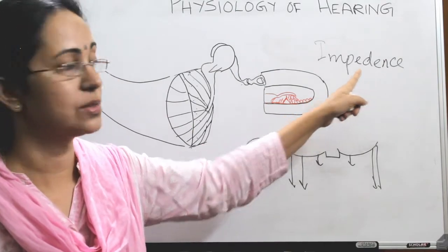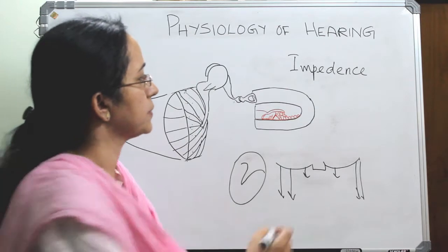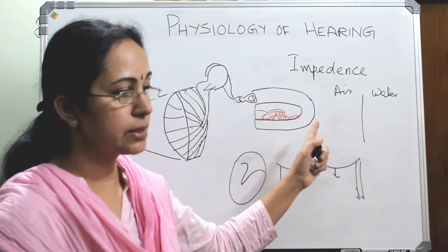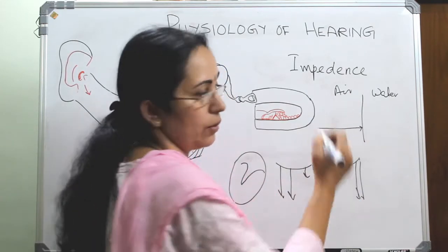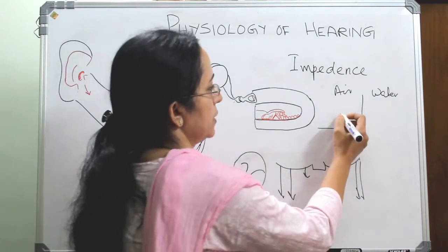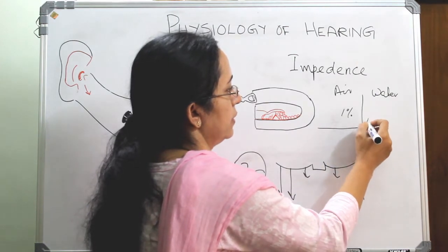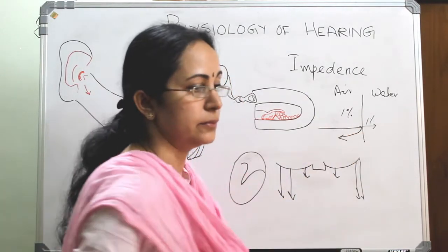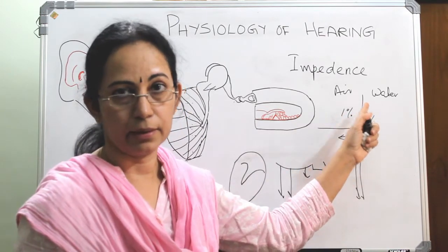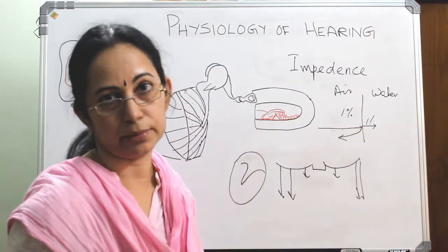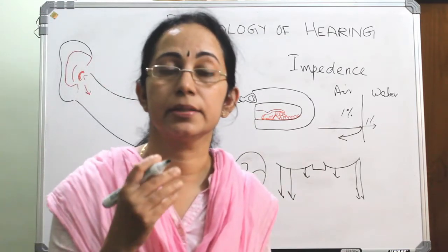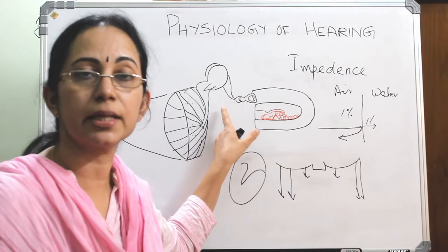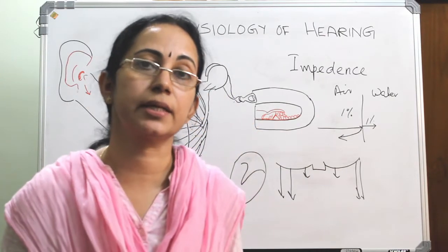If sound directly hits the cochlear wall from air, only about one percent of it will enter the fluid; the remaining 99 percent will reflect back because of the high density or high impedance of the inner ear fluid. Our middle ear has a system to correct this impedance mismatch. The middle ear acts as an impedance matching device, also called a transformer, correcting the impedance mismatch by specific mechanisms.